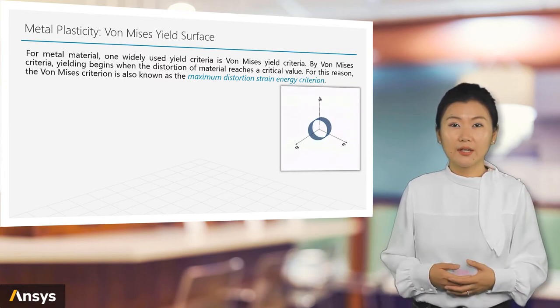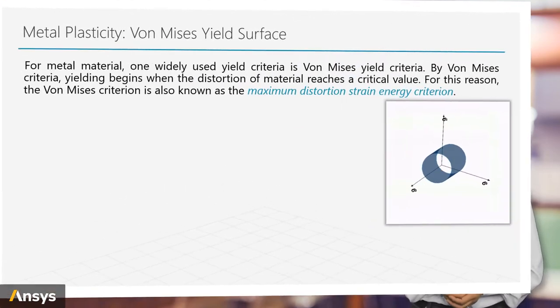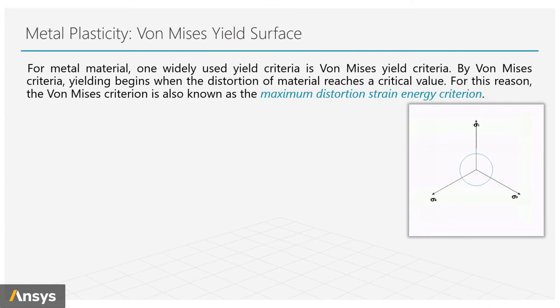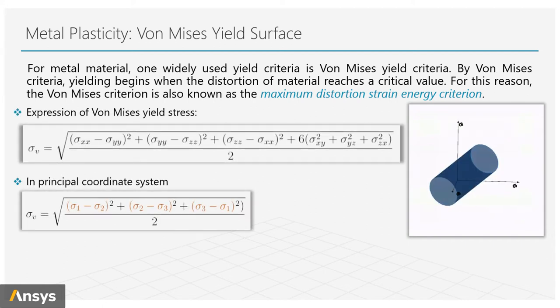Here, since we are discussing metal plasticity, we'll focus on the Von Mises yield criterion. By Von Mises criterion, yielding begins when the distortion of a material reaches a critical value. For this reason, the Von Mises criterion is also known as the maximum distortion strain energy criterion.